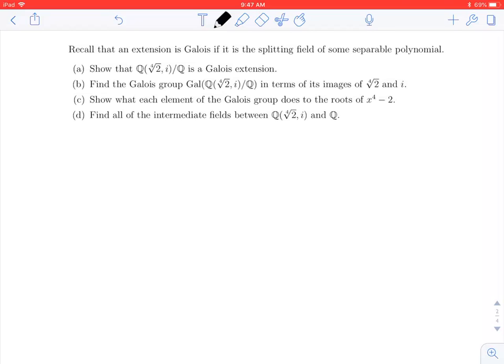In the preamble to the problem, we have a reminder that an extension is Galois if it is the splitting field of some separable polynomial. Now since we're working over the rational numbers, which are a field of characteristic zero, we know that all of our polynomials are going to be separable.